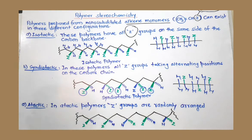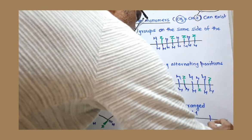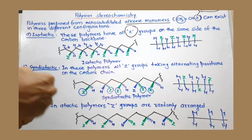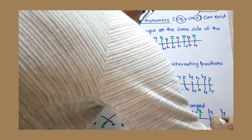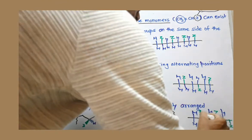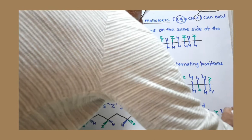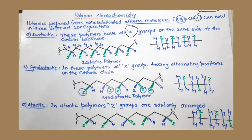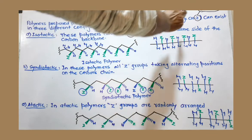In the case of atactic stereoisomers — atactic polymers — Z takes a random position. You draw a line where Z is placed randomly: either above the plane or below the plane with no pattern. Accordingly H is placed on the carbon where Z is attached. There is no regularity in the arrangement of Z and H. These are the three types of stereoisomers possible for polymers where one side chain is present.